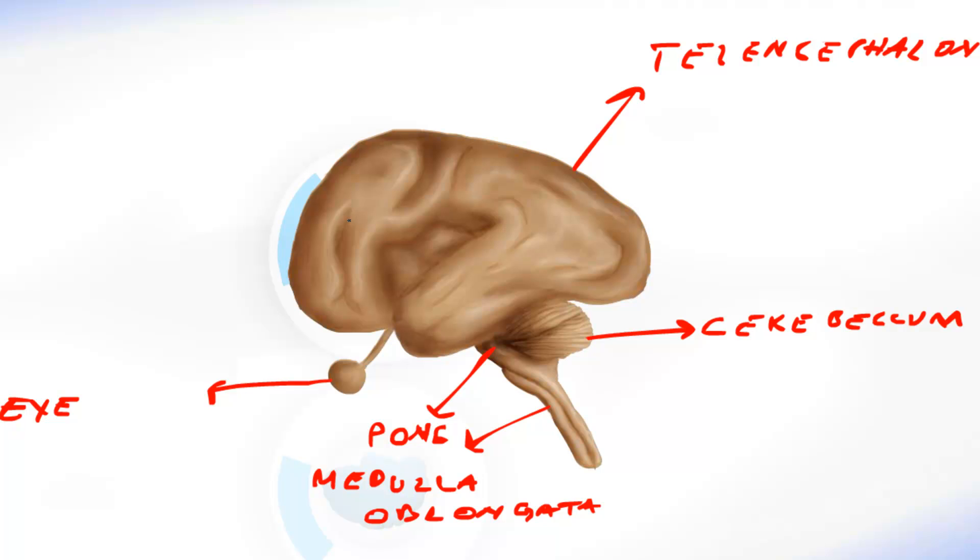Now on the telencephalon you can already notice the sulcus here, here, here, here. Also gyrus, here, here. You can notice the temporal lobe, the occipital lobe, parietal lobe, frontal lobe.